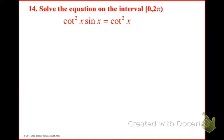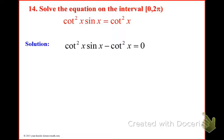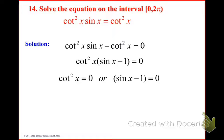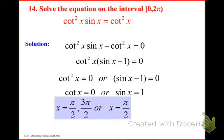So on this one we're going to go ahead and move the cotangent squared over. So then we would have cotangent squared x times sine x minus cotangent squared x equal to 0. And now we can factor out the cotangent squared, leaving us with sine x and minus 1. Then set them equal to 0 separately. So cotangent equals 0 at π/2 and 3π/2, and sine x equals 1 at π/2.